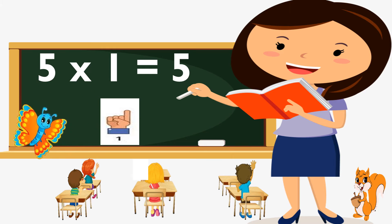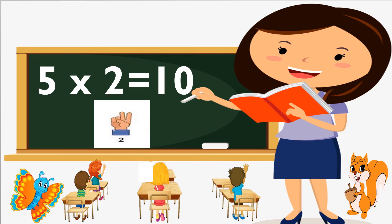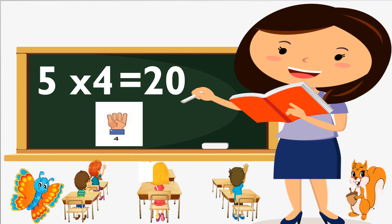5 ones are 5. 5 twos are 10. 5 threes are 15. 5 fours are 20.